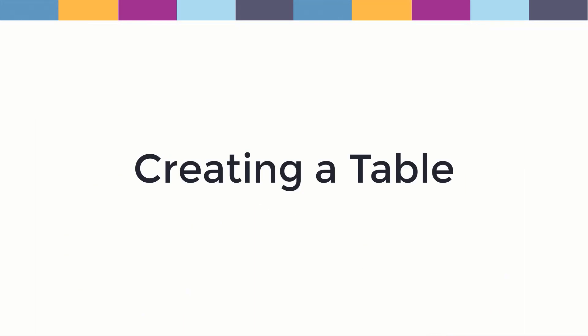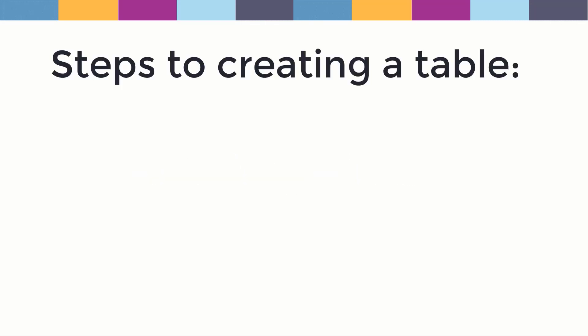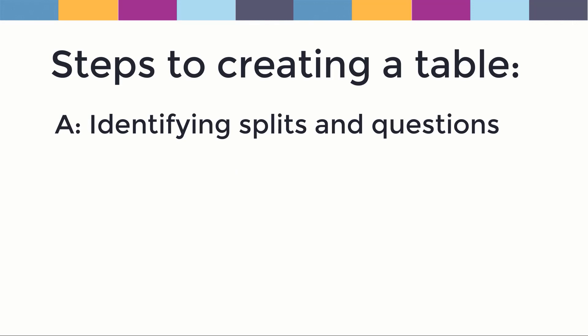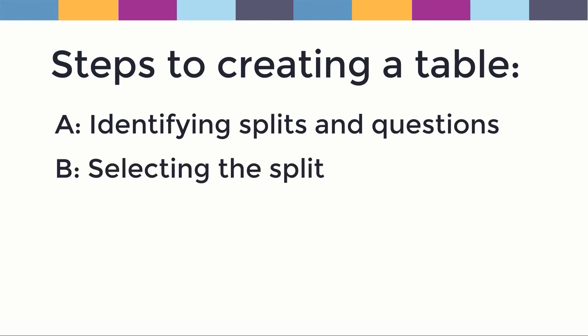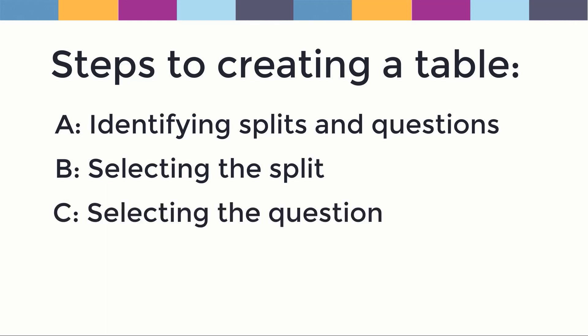We can create a Vividata table in four main parts: A, identifying splits and questions; B, select the split; C, select the question; and D, final steps.